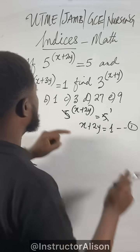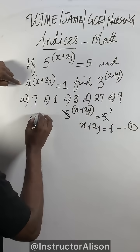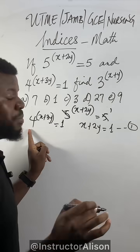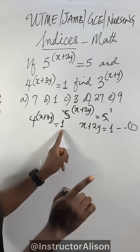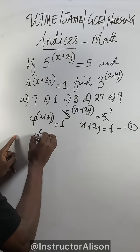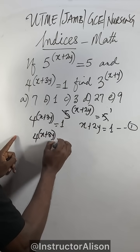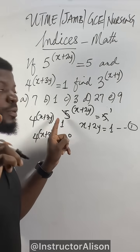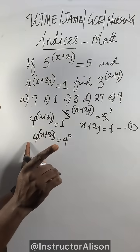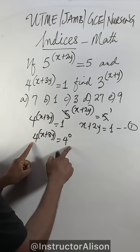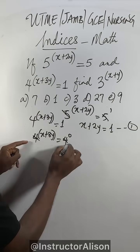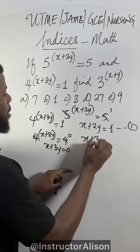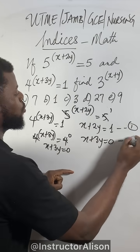Now this one: let's say 4 to the power of x plus 3y equal to 1. Because the base is now 4, I will raise this to be 4 to the power of x plus 3y equal to 4 to the power of 0, because anything raised to the power of 0 is 1. I choose 4 because the base here is 4. So because the base is the same, equate the powers: x plus 3y equal to 0. Equation 2.